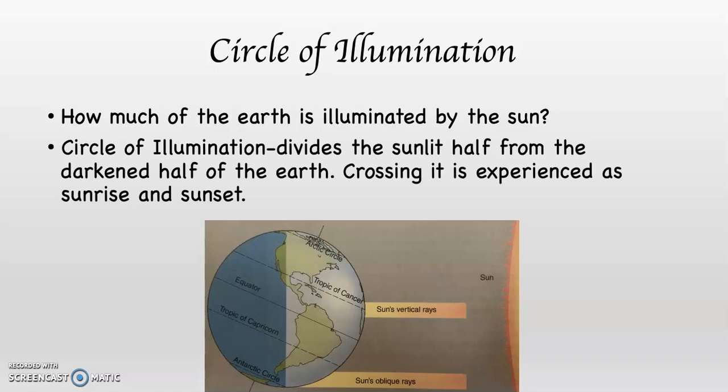The line that divides the sunlit half from the darkened half of the Earth is called the circle of illumination. And you can see it very clearly on that diagram. Crossing the circle of illumination is experienced as sunrise or sunset.